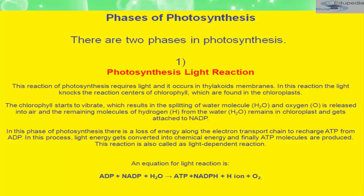My topic for this presentation is the second section of the chapter on photosynthesis. In this section we will discuss the phases of photosynthesis. As I told you, photosynthesis takes place in two consequential stages: first, the light-dependent reaction, and second, the light-independent reaction or Calvin cycle.